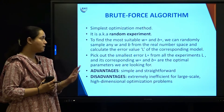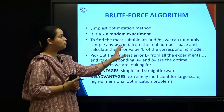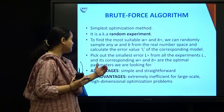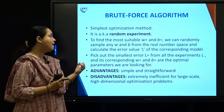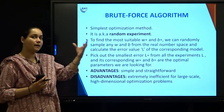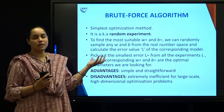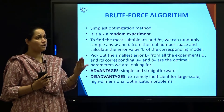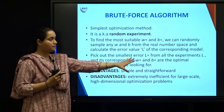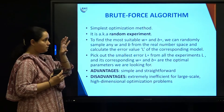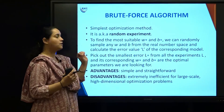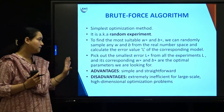In the brute force algorithm, you find the most suitable W* and B* — the optimal weights and biases. You randomly sample any value for W and B from real number space, then calculate the value of L using those W and B. You fit different sampled values of W and B into the equation of L and find which combination gives the least value of L, which is your mean square error. You pick out the smallest L* from all experiments, and the values of W and B that gave you that minimum L are your optimal parameters W* and B*.